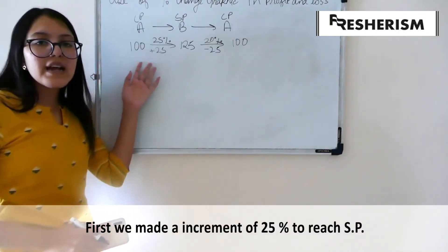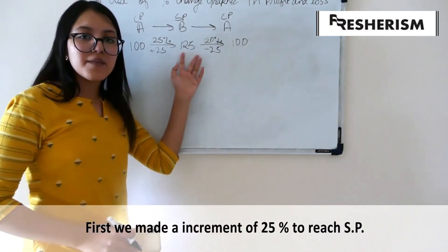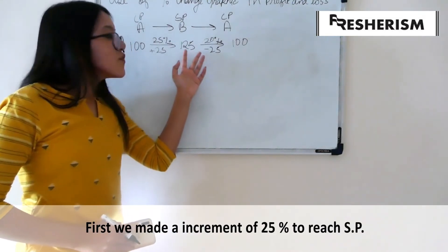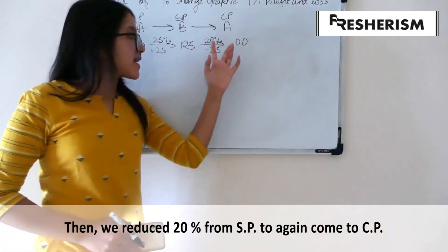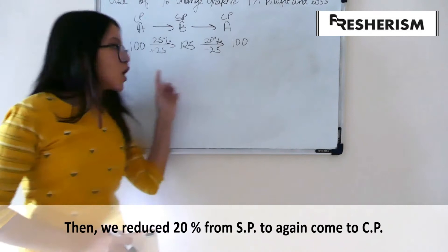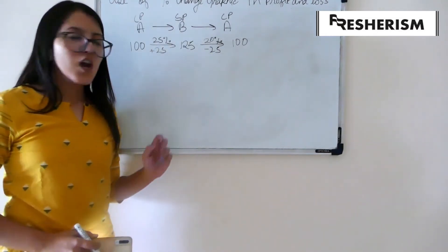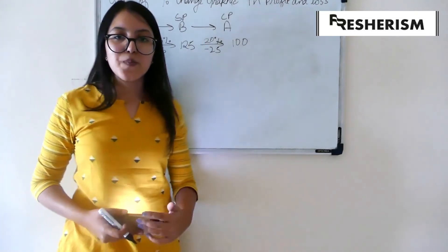Understand this. Here, we made an increment of 25% from cost price to come to our selling price. Then, we made a reduction of 20% from our selling price to come back to our cost price. I hope this is clear. To make things more clear, let us take an example.